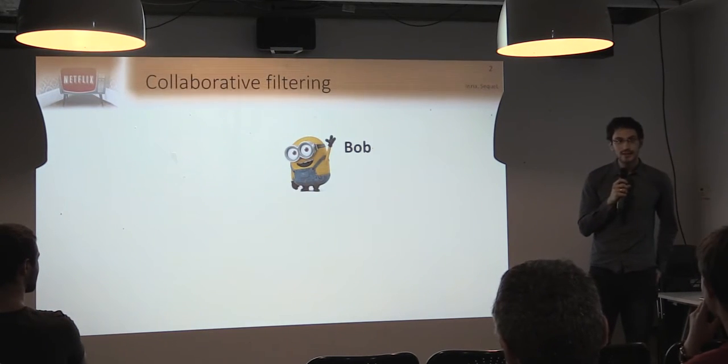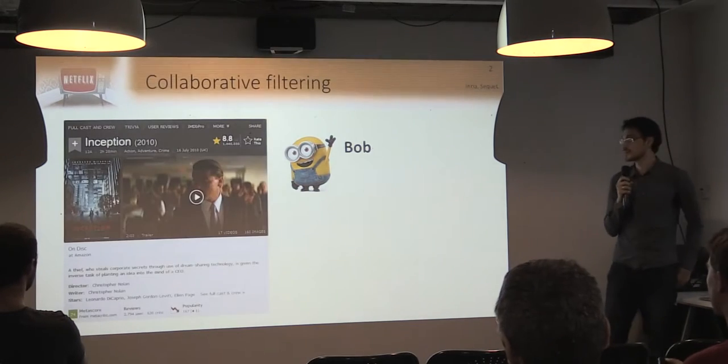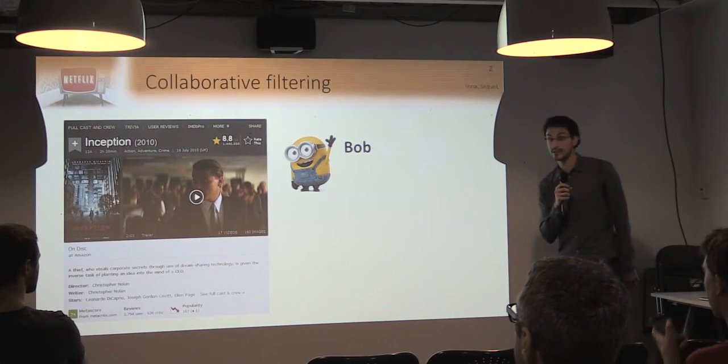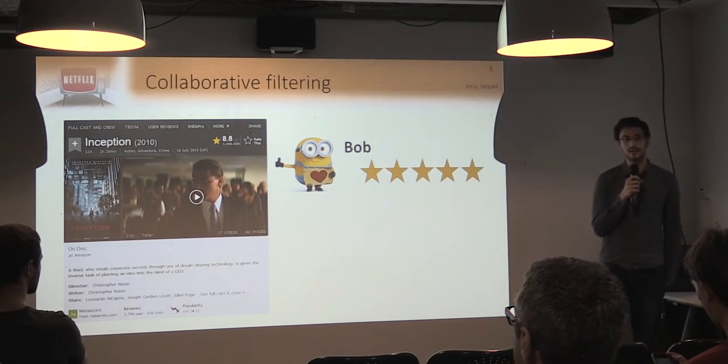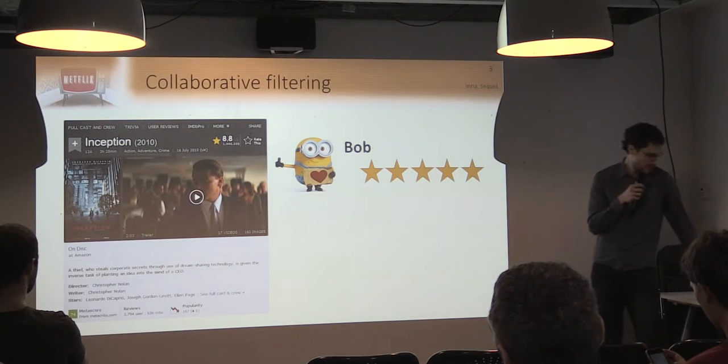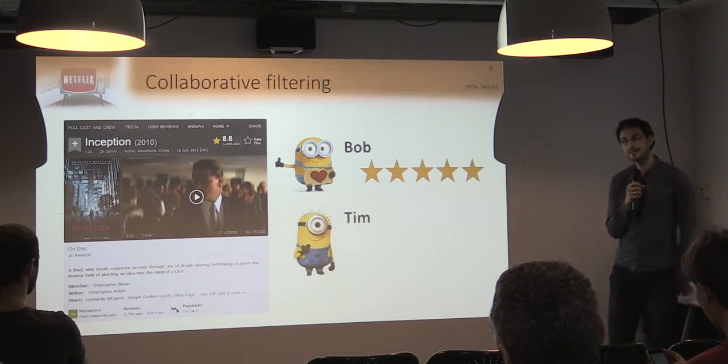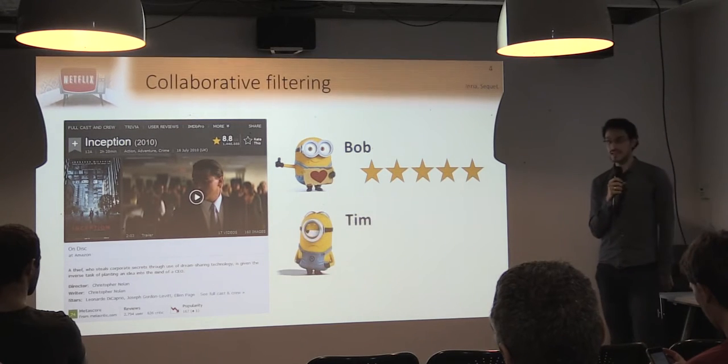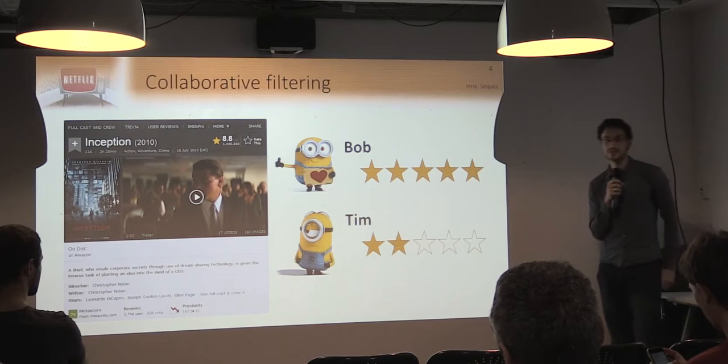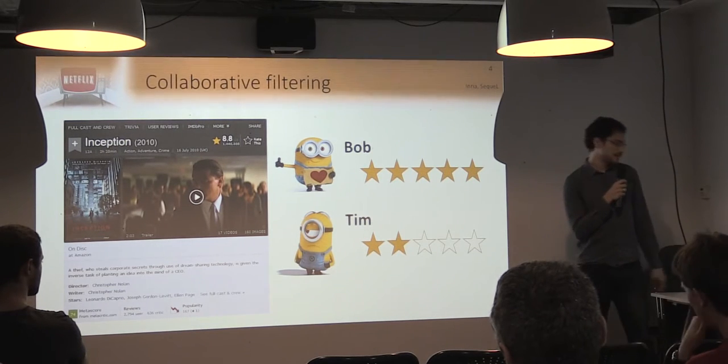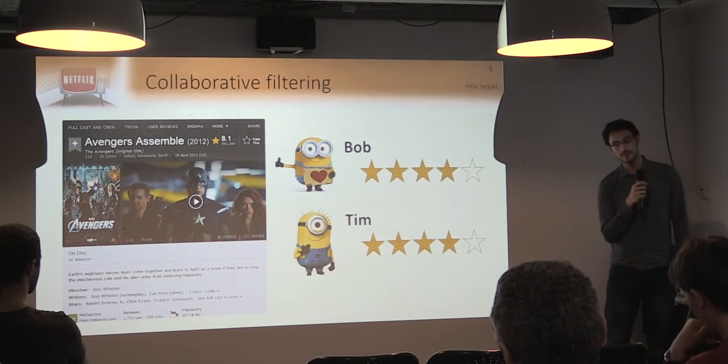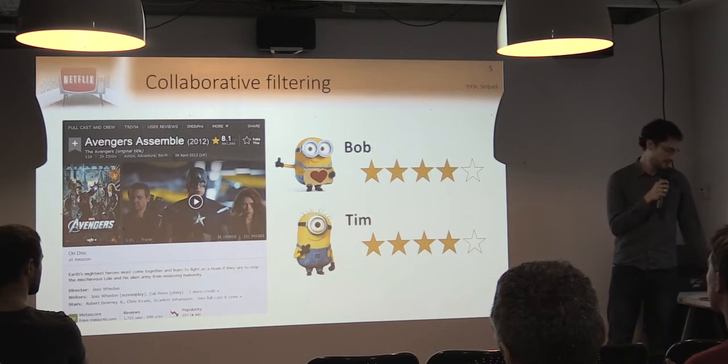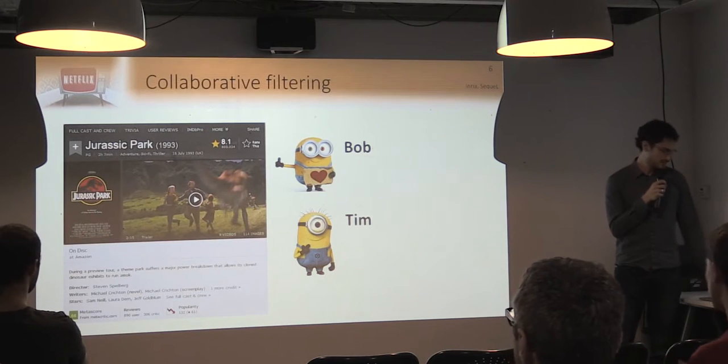Bob is someone that likes watching movies. So one day, he watched Inception and he said, did I like it? Yes. He put five stars on IMDb. And Bob has a friend, Tim. Tim didn't like the movie very much. So he put two stars on IMDb. And the days after, they went to see another movie, the Avengers. Both of them liked it.